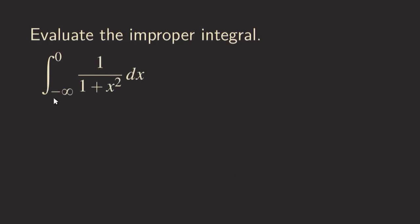Here's another problem. This time we have the lower limit as negative infinity and the upper limit is 0. We are still going to use the definition to write that as a limit, with a approaching negative infinity, the integral going from a to 0, and the integrand 1 over (1 + x²) dx.